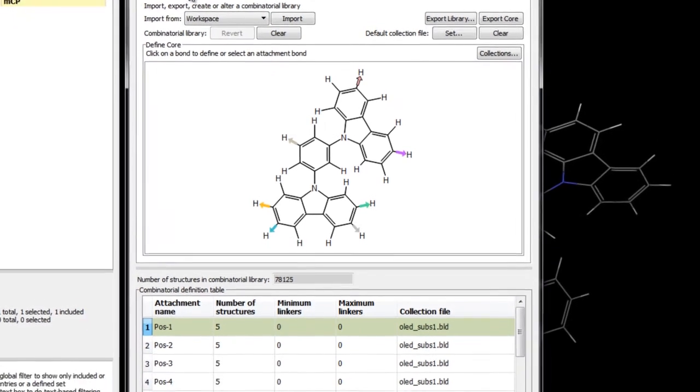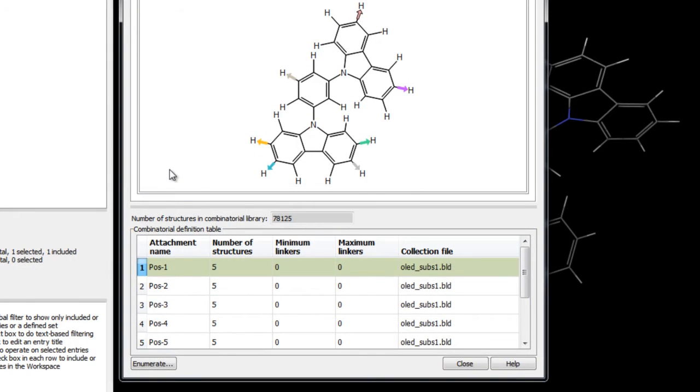Back in the combinatorial library tab, once we are satisfied with the attachment positions and the fragment collection file to be used, we can click enumerate.